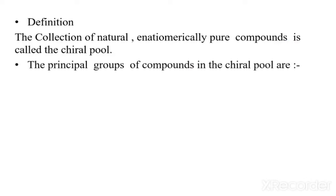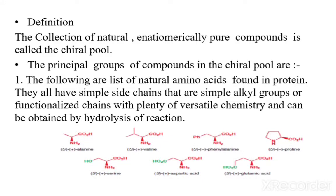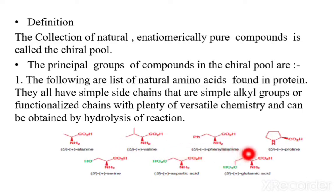There are some principles involved in chiral pool. The principal groups of compounds in the chiral pool are: number one, the natural amino acids. These are found in proteins and they all have a simple side chain — either simple alkyl groups or a functionalized chain with plenty of versatile chemistry — and are obtained by hydrolysis. These include alanine, phenylalanine, proline, serine, aspartic acid, and glutamic acid.